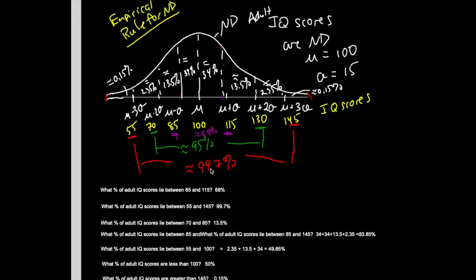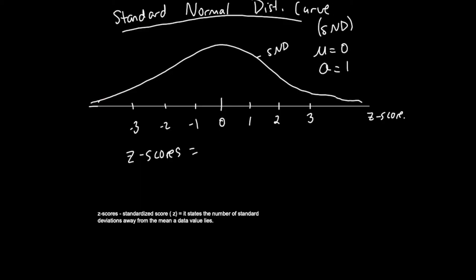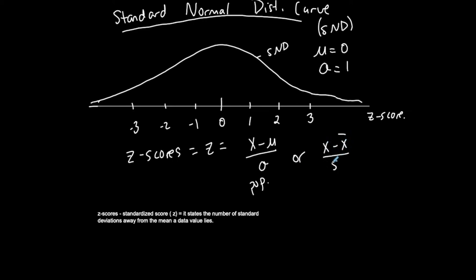How would I determine the z-score for a value like 120? You have a formula: z equals x minus mu over sigma. X is the data value, mu is your mean, sigma is your standard deviation. This is in population notation. In sample notation it's x minus x-bar over s — the same formula, same movement. Don't mix up x with x-bar; x is the data value, x-bar is the mean. Subtract the mean from the data value and divide by the standard deviation.